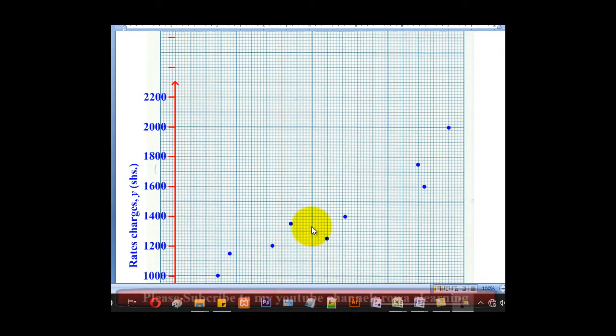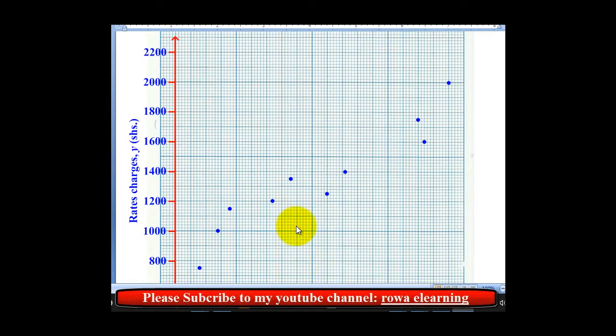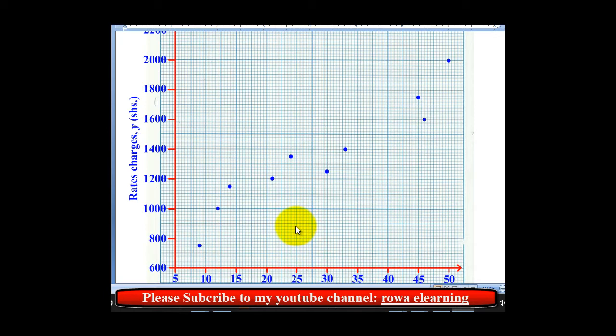So in lesson 1, as a review, we drew this Scatter Diagram and today we are going to start from there to see how to get the line of best fit.